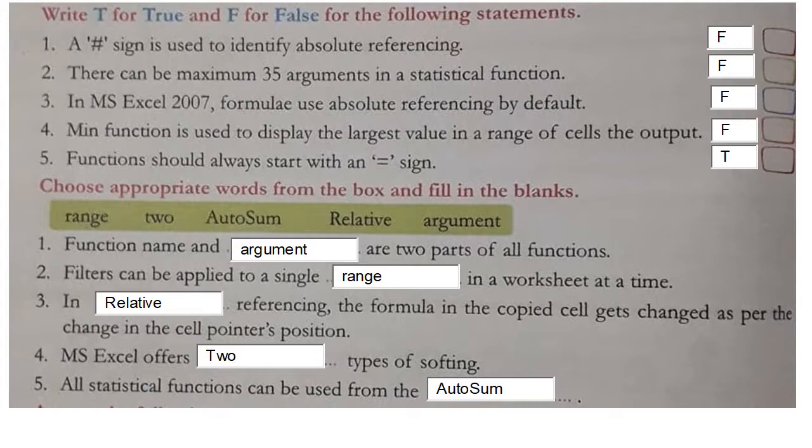Fourth: minimum function is used to display the largest value in a range of cells as the output - false, minimum displays the lowest value. Fifth: functions should always start with an equal to sign - true.